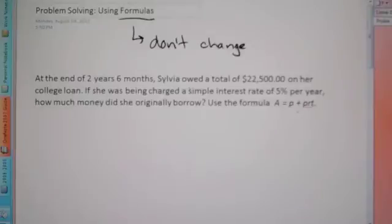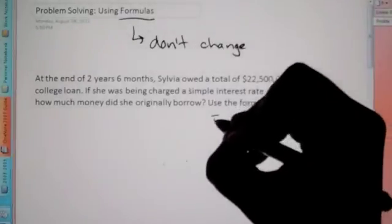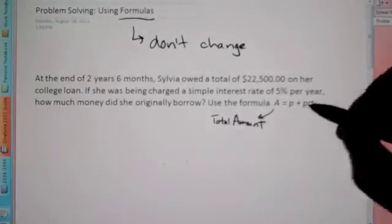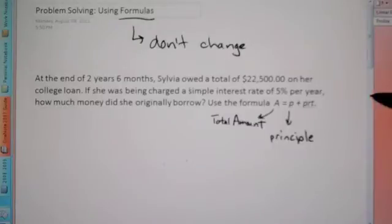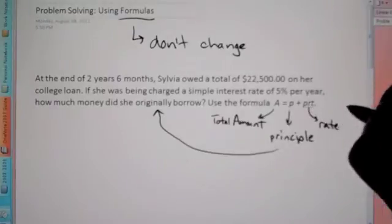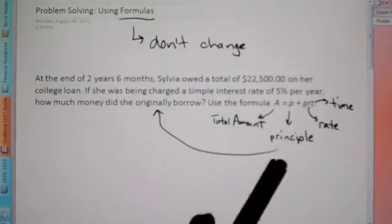Let's get to our first word problem. It says: at the end of two years, six months, Sylvia owed a total of $22,500 on her college loan. If she was being charged a simple interest rate of 5% per year, how much money did she originally borrow? Use the formula A equals P plus PRT. First of all, it's good to know what these mean. A stands for total amount, P stands for principal — basically how much did you originally borrow — R stands for rate, and T stands for time. Formulas only work if you understand what the variables stand for.